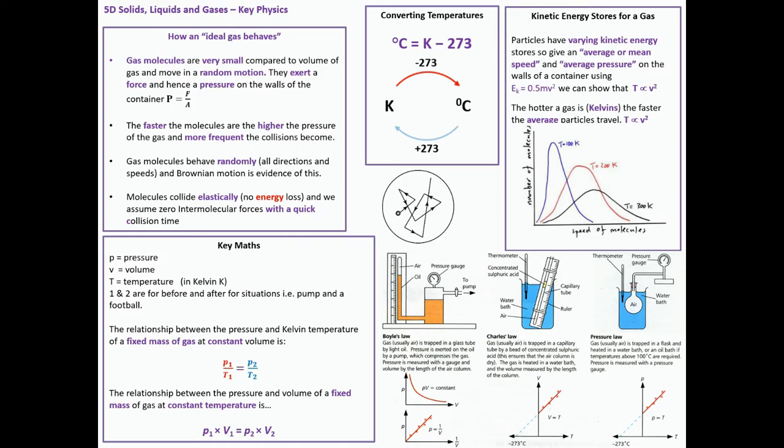This is the last section in solids, liquids, and gases, 5D. We're looking at how an ideal gas behaves. Gas molecules are very small compared to the volume of the gas, moving in random motion. They will exert a force, and hence pressure on the walls of the container. The faster the molecules are, the higher the pressure of the gas, and the more frequent the collisions become. Gas molecules behave randomly in all directions and speed, and Brownian motion is evidence of it. You can see a picture there of a molecule that's been buffeted by these invisible molecules of gas. The molecules will collide elastically. We assume no energy loss, and we assume that the intermolecular forces are pretty much zero.